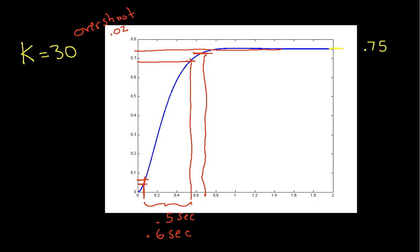So you can see that by increasing the gain from 10 to 30, we've reduced the steady state error, we've decreased the rise time, we've decreased the settling time, and we've introduced just a little bit of overshoot. But our steady state error is still 0.75.